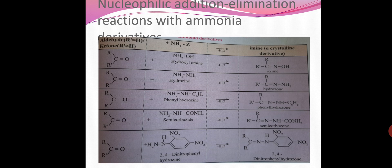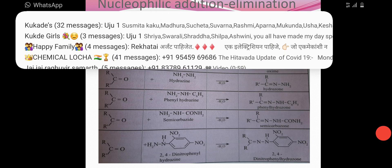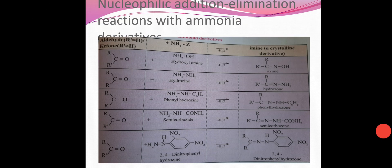Nucleophilic addition-elimination reaction with ammonia derivatives: ketone plus NH2OH hydroxylamine gives oxime. Acetone plus hydroxylamine gives oxime. Phenylhydrazine gives phenylhydrazone, semicarbazide gives semicarbazone, and ketone plus 2,4-dinitrophenylhydrazine gives dinitrophenylhydrazone.